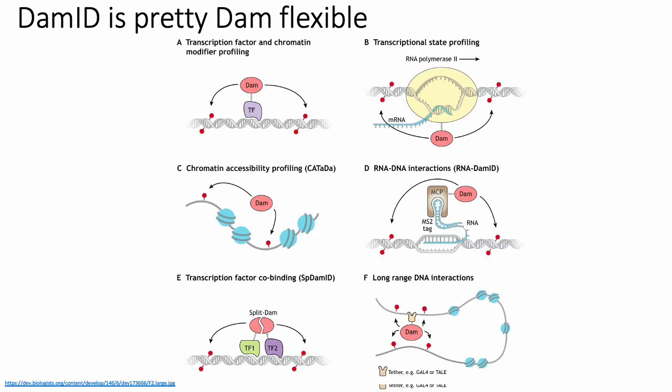You could create a fusion protein between components of RNA Pol II and DAM so that you can observe where transcription is happening, because you'll see methylated adenines in GATC motifs wherever RNA Pol II is transcribing. DAM also has a strong preference for methylating accessible adenines in GATC motifs — GATC motifs in regions wrapped up in histones are much less likely to be methylated. So in some sense, you can use DAM to identify open chromatin regions, which are generally associated with active transcription.